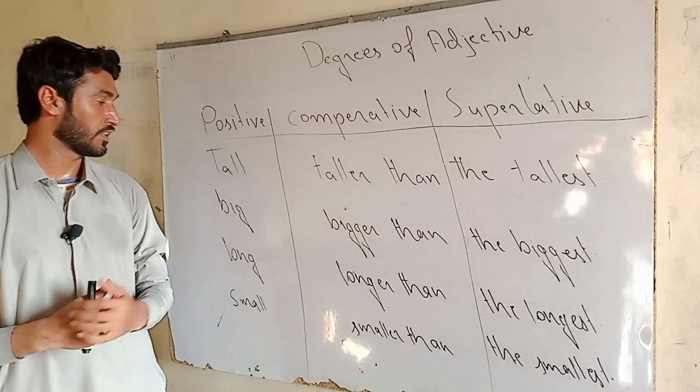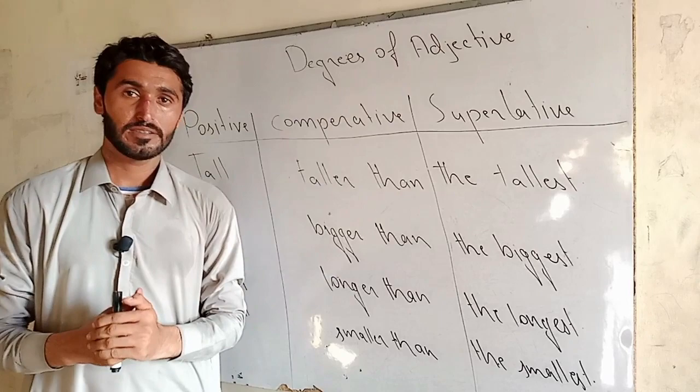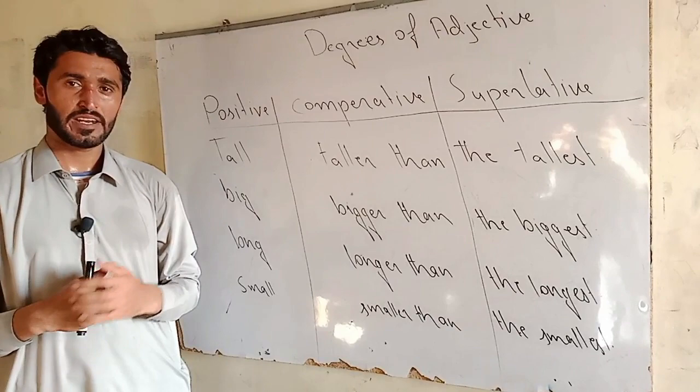The first example adjective is tall. He is a tall boy — there is no comparison. Ali is taller than him — there is comparison of two students. Emma is the tallest boy in the class — means there is comparison of three or more than three students.